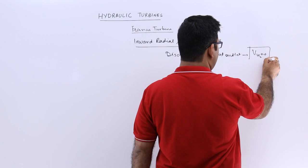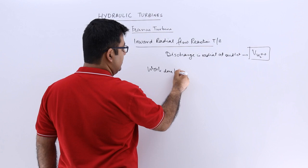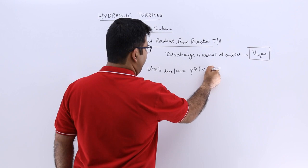Now this means that the work done by the water per second is equal to rho Q Vw1 into U1 because Vw2 is 0.